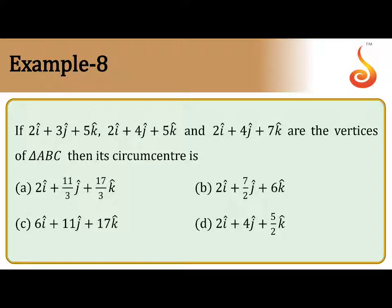If 2i plus 3j plus 5k, 2i plus 4j plus 5k, and 2i plus 4j plus 7k are the vertices of triangle ABC, then find its circumcenter.